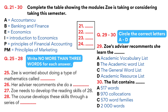Section 3. Zoe goes to talk to her academic advisor. First, you have some time to look at questions 21 to 30. Now, listen carefully to the conversation between Zoe and her advisor and answer questions 21 to 30.